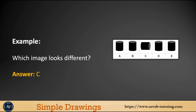Next question — which image looks different? You could see A, B, C, D, and E. All of them are cylindrical shapes oriented vertically, but letter C is different because it goes horizontal. So the correct answer is C.